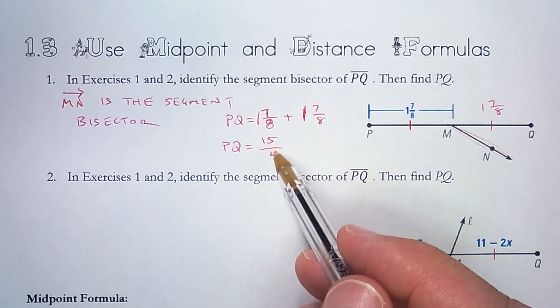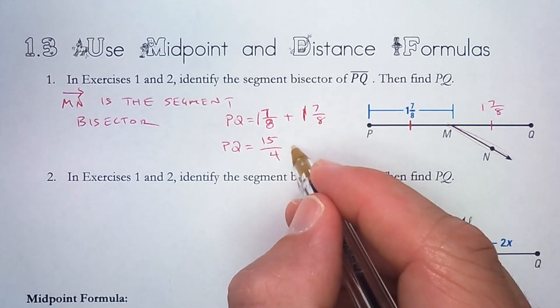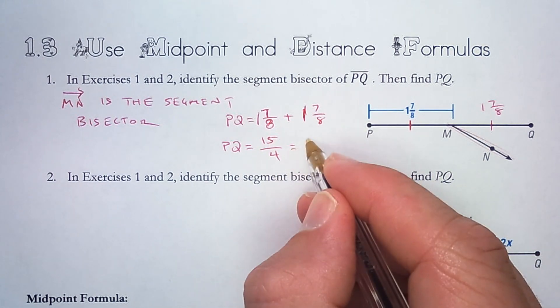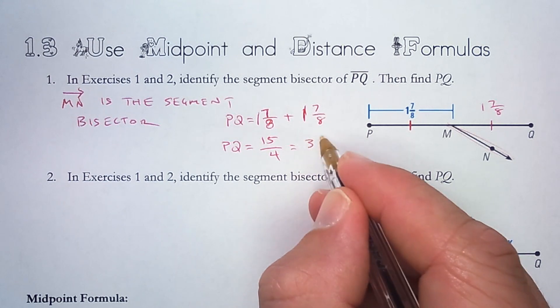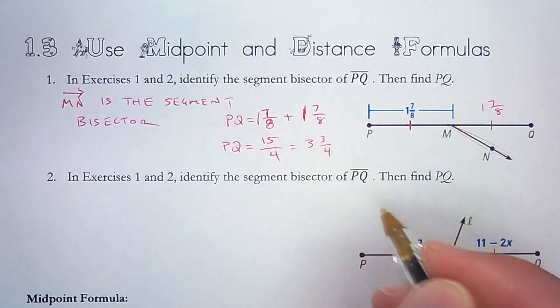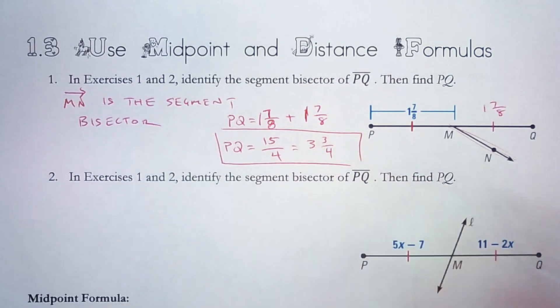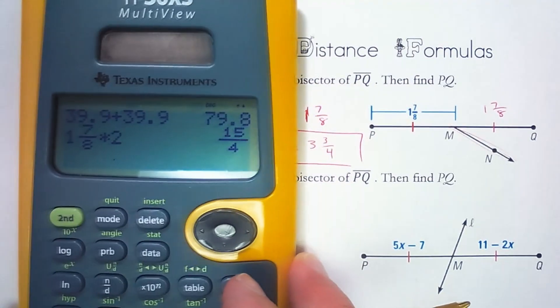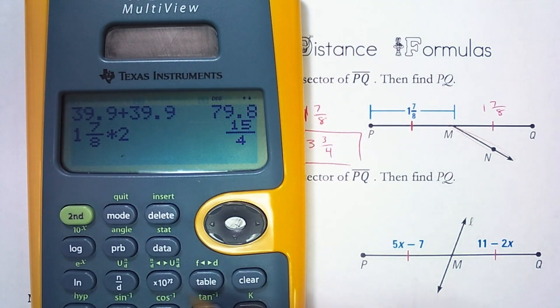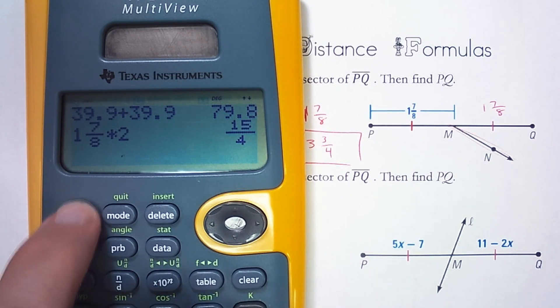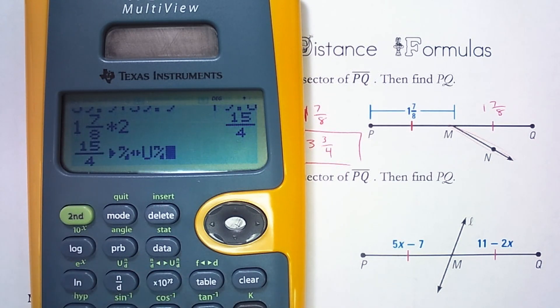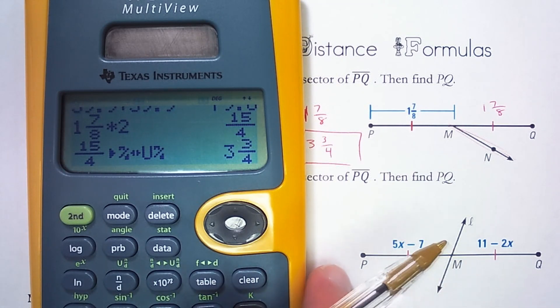4 goes into 15 three times with 3 left over. So that would be the same as 3 and 3 fourths. I could also make that change on this calculator. So I could use this button right here, improper fraction to a mixed number. So second, and then make that change, enter 3 and 3 fourths.